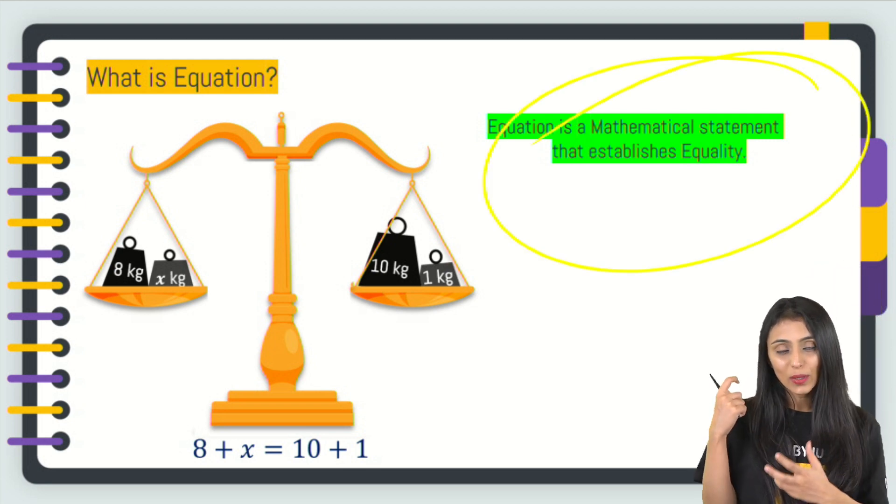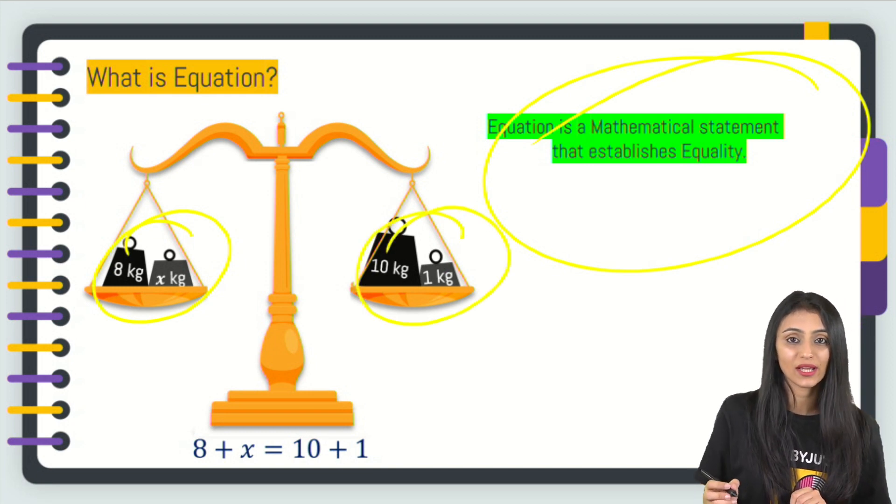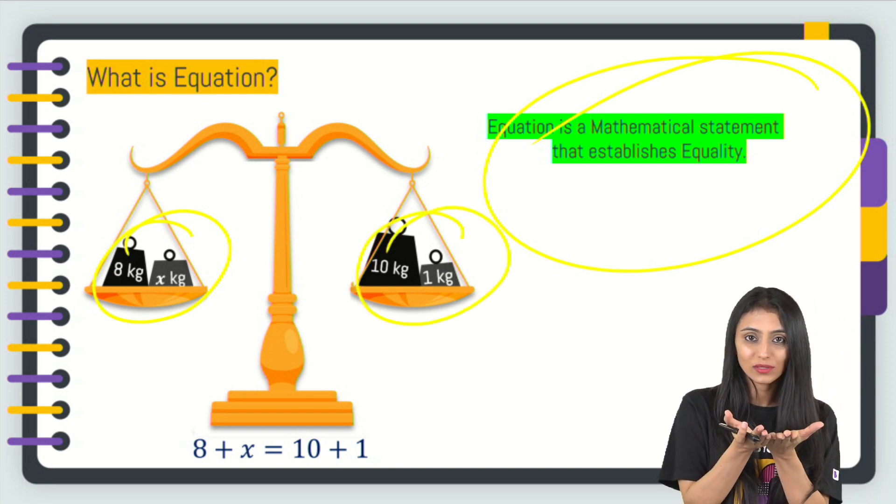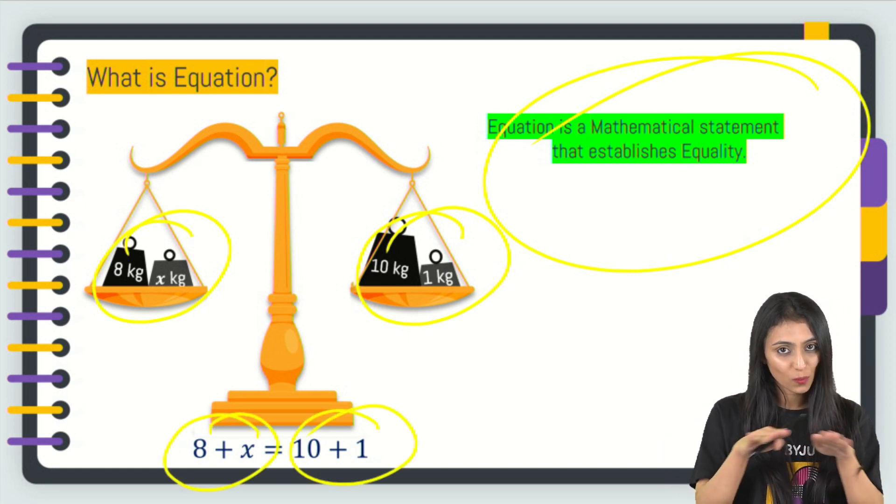If we look at this beam balance over here, it's 8 kg and x kg here, and it's 10 kg and 1 kg here. We can see that both the sides over here are balanced, right? So we can say that 8 + x is going to be equal to 10 + 1. The weights are balanced on both sides.